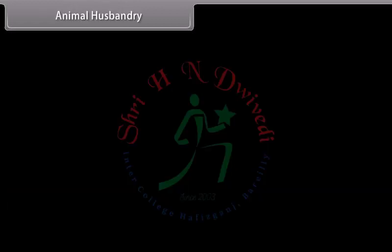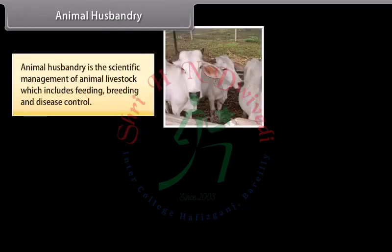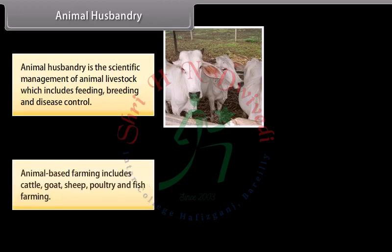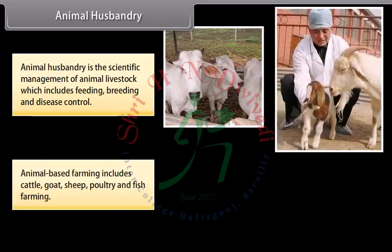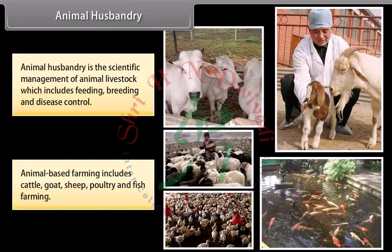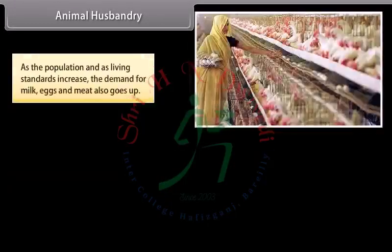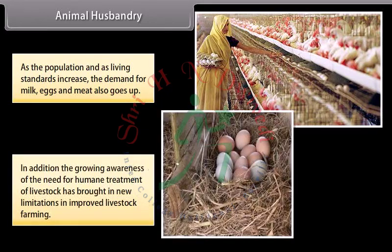Animal husbandry is the scientific management of animal livestock, which includes feeding, breeding and disease control. Animal-based farming includes cattle, goat, sheep, poultry and fish farming. As the population and living standards increase, the demand for milk, eggs and meat also goes up. The growing awareness of the need for humane treatment of livestock has brought new limitations in improved livestock farming.